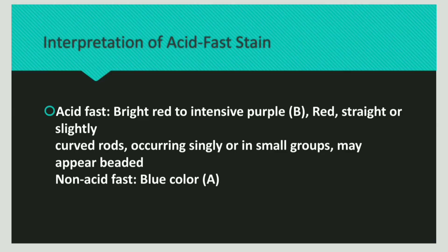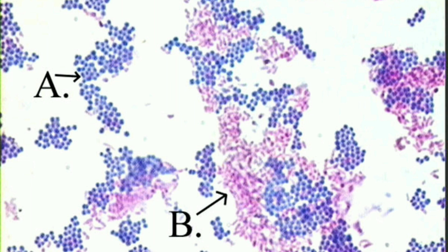Now let us discuss the interpretation of acid-fast staining. The acid-fast bacteria are bright red in color, whereas the non-acid-fast bacteria are blue in color. In this diagram, A shows the non-acid-fast bacterium, whereas B shows the acid-fast bacterium — the acid-fast bacteria are red stained and the non-acid-fast bacteria are blue stained.